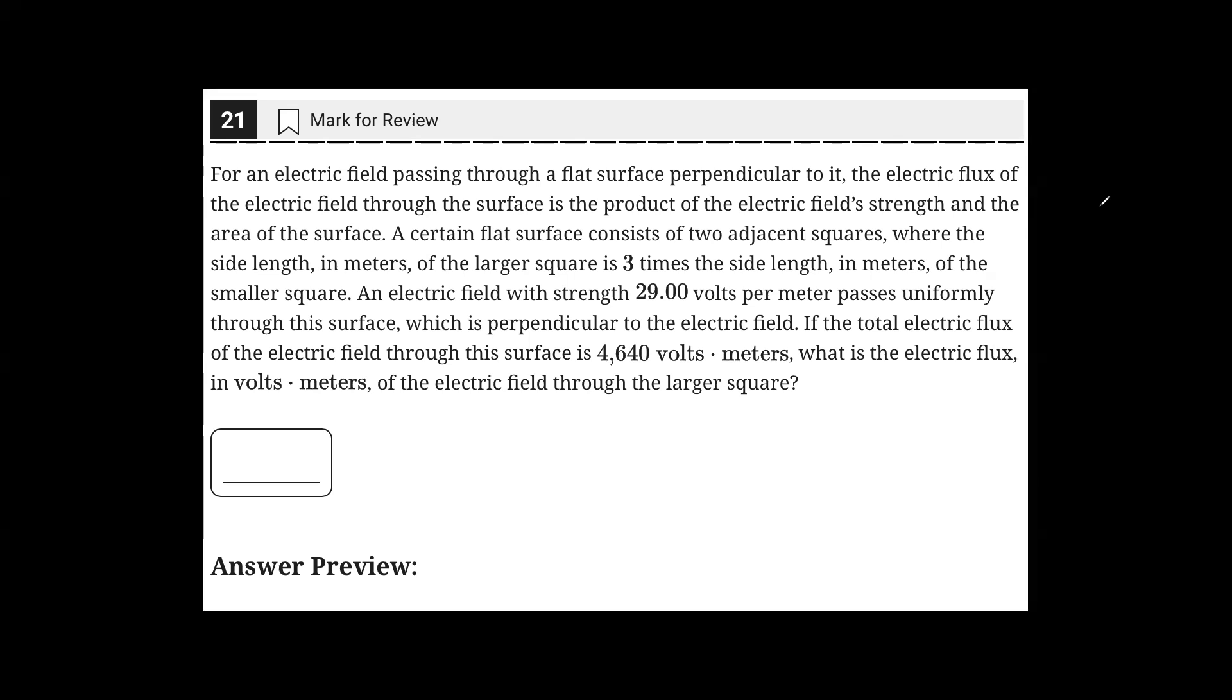A certain flat surface consists of two adjacent squares, where the side length of the larger square is three times the side length in meters of the smaller square. An electric field with strength 29 volts per meter passes uniformly through this surface, which is perpendicular to the electric field.